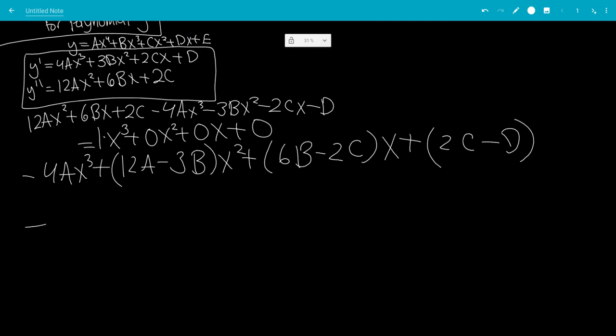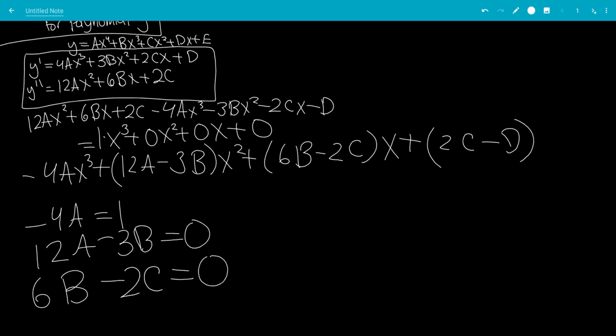And it's equal to 1 times x cubed plus 0 times x squared plus 0x plus 0. So now we have that negative 4a equals 1. We have that 12a minus 3b equals 0. We have that 6b minus 2c equals 0, because they're all 0 terms except x cubed. And finally, 2c minus d equals 0.